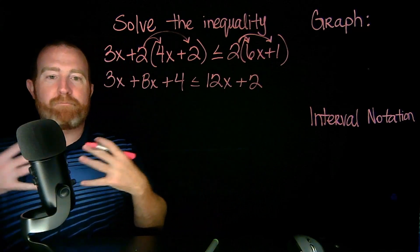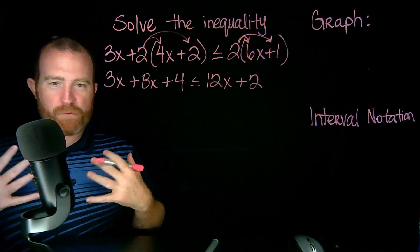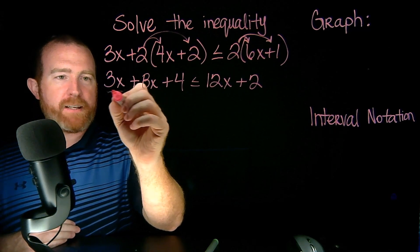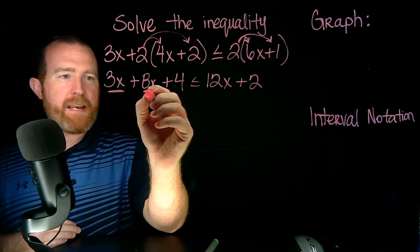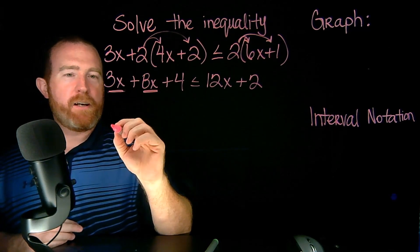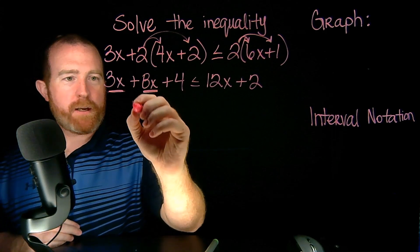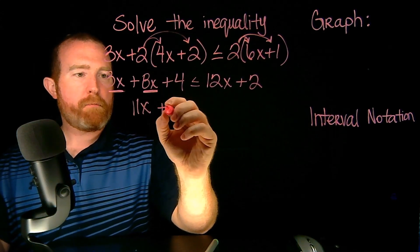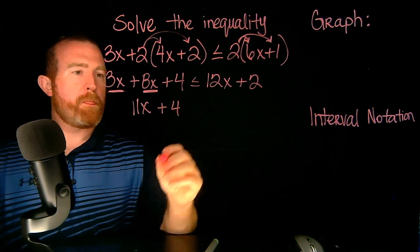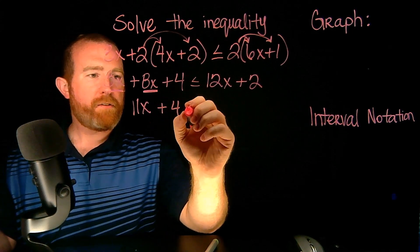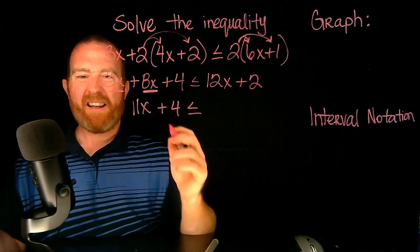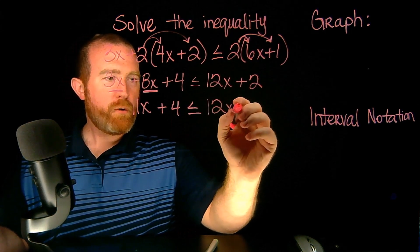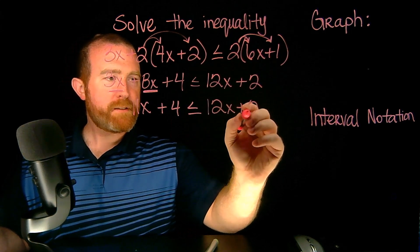Now what I want to do is combine like terms where I can. I see that I have a 3X and an 8X — that's going to give me 11. So here I have 11X, plus 4, less than or equal to. There's really nothing to combine on the right side, so I can leave it as 12X plus 2.